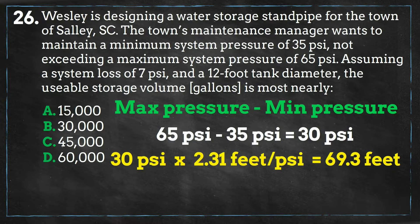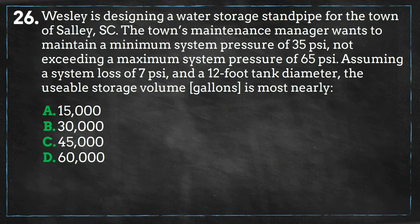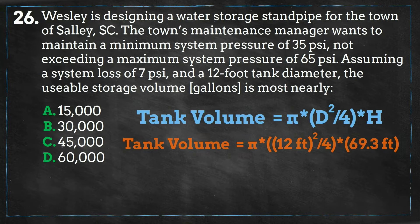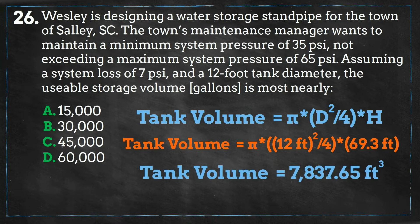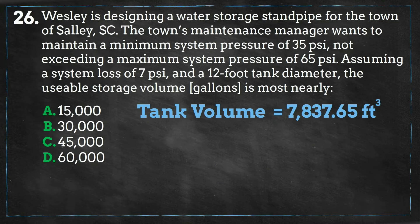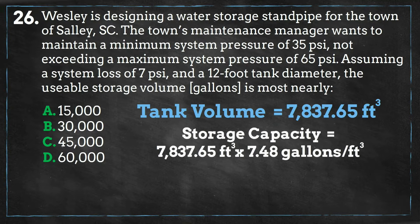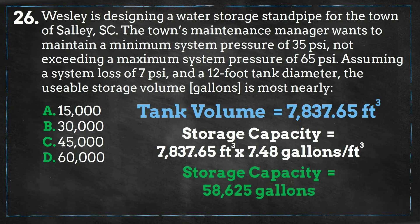Now that we have the tank's height along with the diameter, we can solve for the volume of the tank, and we get approximately 7,838 cubic feet. Using the water conversion of 7.48 gallons per cubic foot, we multiply this by the tank's volume and get 58,625 gallons, which is closest to D.